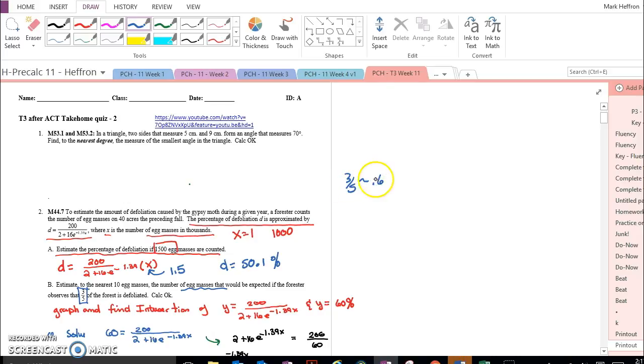3 fifths as a decimal is 0.6, and a percentage is 60%. So we're really saying, when D is 60%, what would X be?